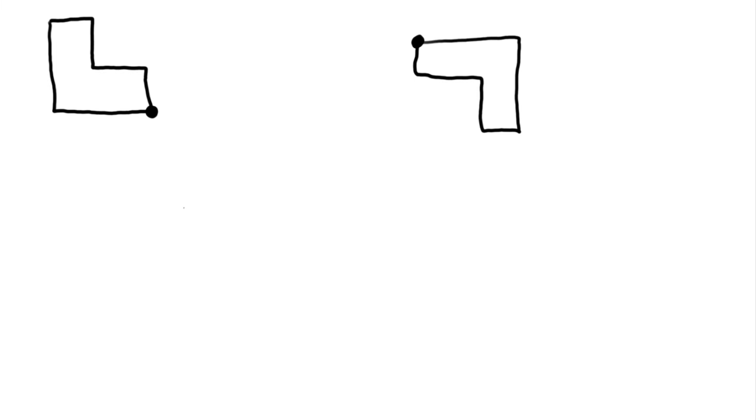Now I'm going to move that and join it onto the shape we started with. Now we've created a shape that has half-turn symmetry around the black point in the middle.